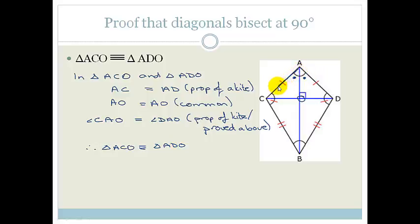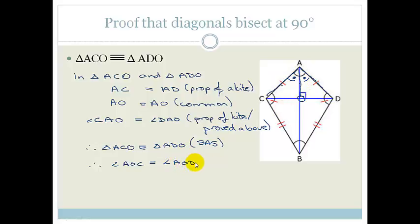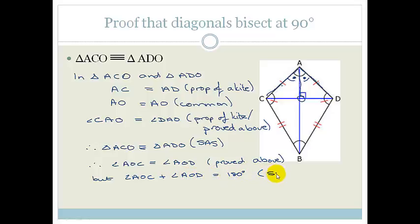This congruency is by side-angle-side — a side, an enclosed angle, and a side. Therefore angle AOC equals angle AOD, as proved above. But angle AOC plus angle AOD equals 180 degrees because they are supplementary — they are on a straight line.